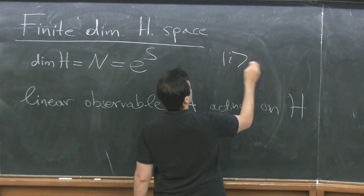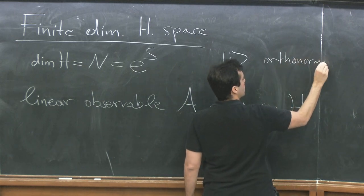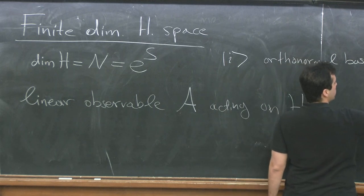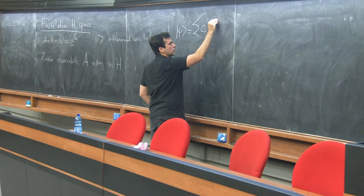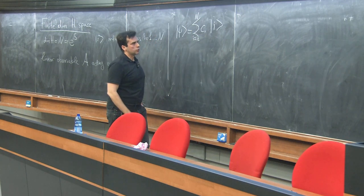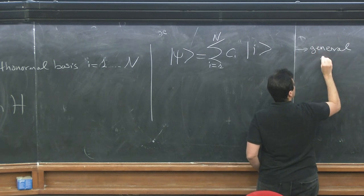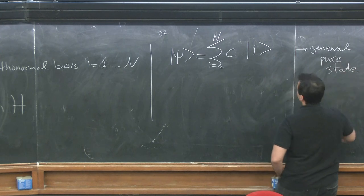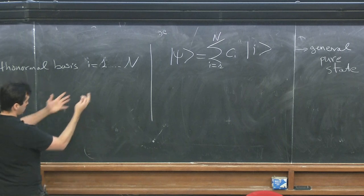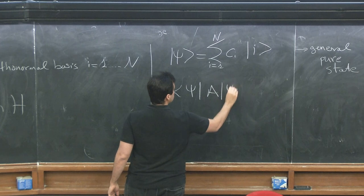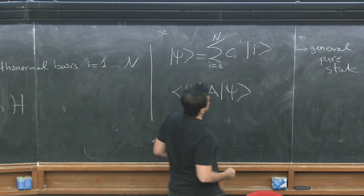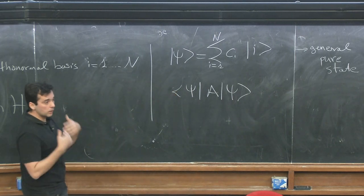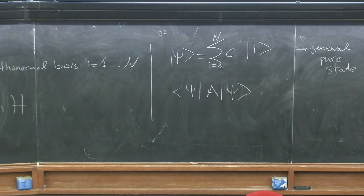Let's denote |i⟩ an orthonormal basis of this Hilbert space, where i goes from 1 to N. The most general pure state is a vector |ψ⟩ = Σ c_i |i⟩. We want to consider the expectation value of observable A on this pure state and investigate how it depends on the choice of coefficients c_i. The argument is that for most choices of these coefficients, the result will be almost the same, provided the dimensionality N is very large.